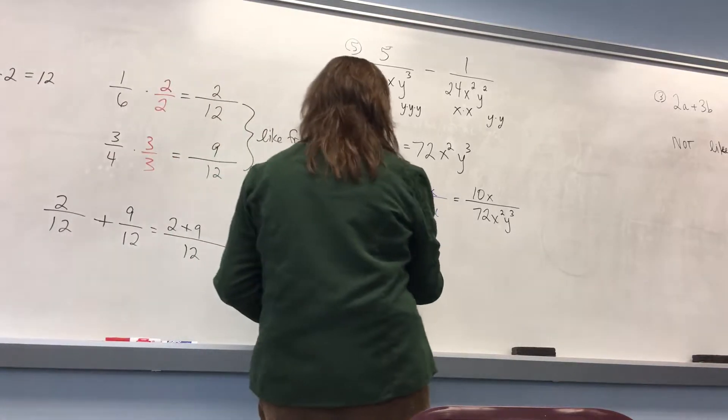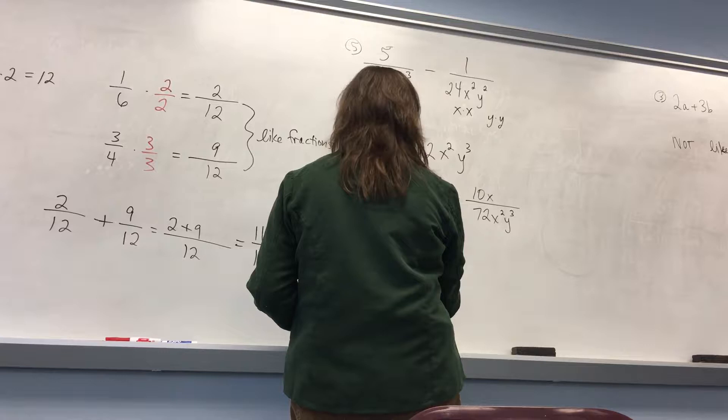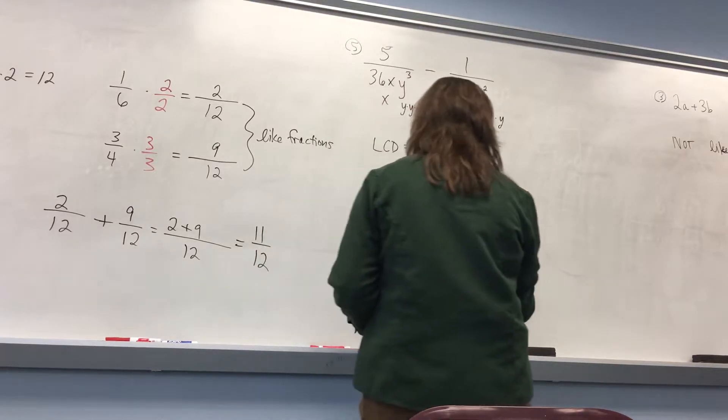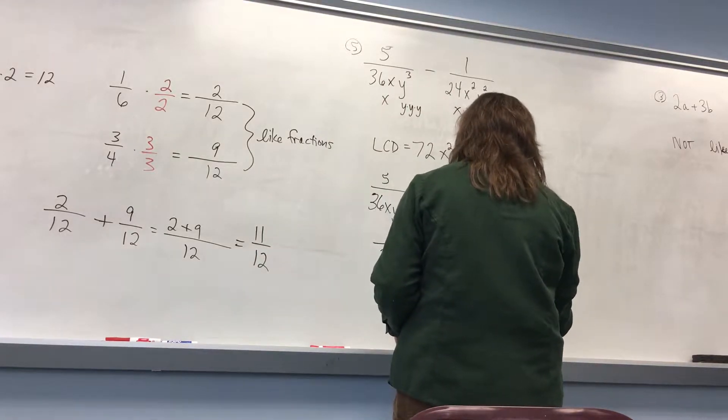Now the second fraction — I have 1 over 24x squared y squared. Leave a little space, write the denominator that I want.